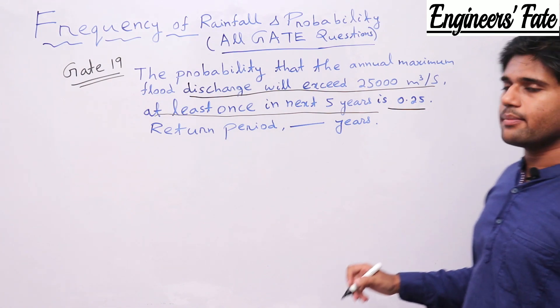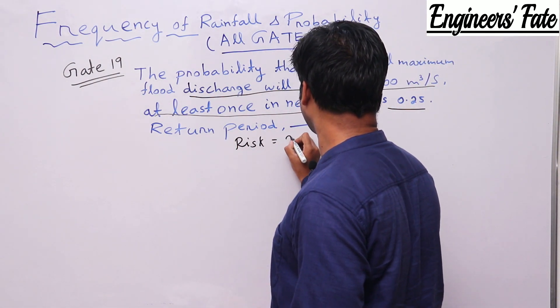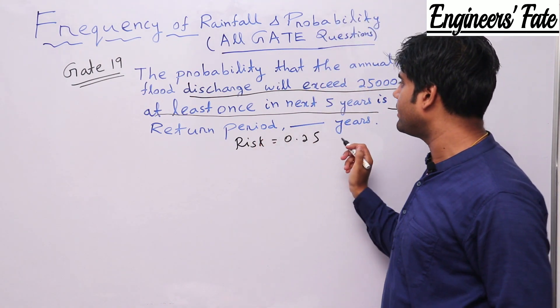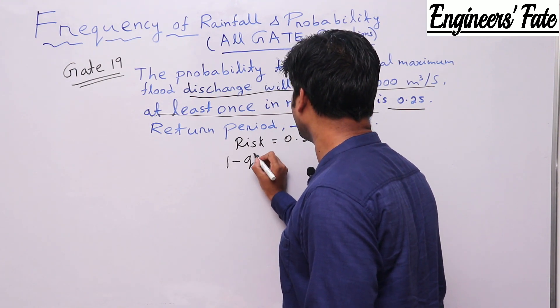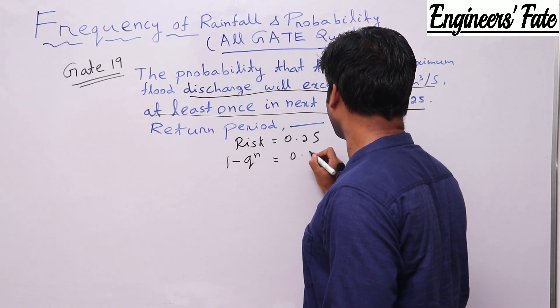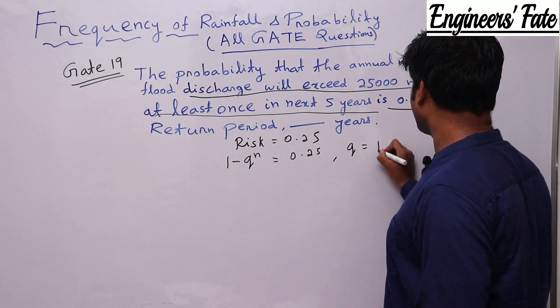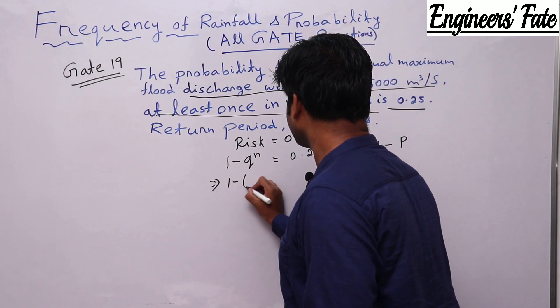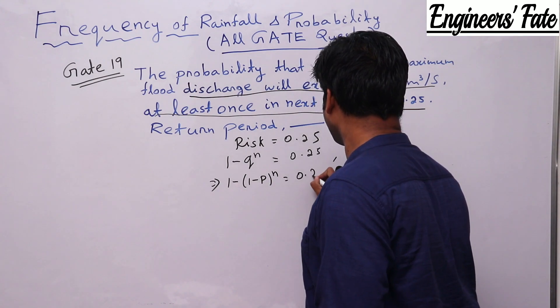Risk is 0.25 means he has given risk equal to 0.25 and he has asked us to calculate return period. We know that risk equal to 1 minus Q to the power N equal to 0.25. What is Q? Q equal to 1 minus P. So 1 minus P to the power N equal to 0.25.